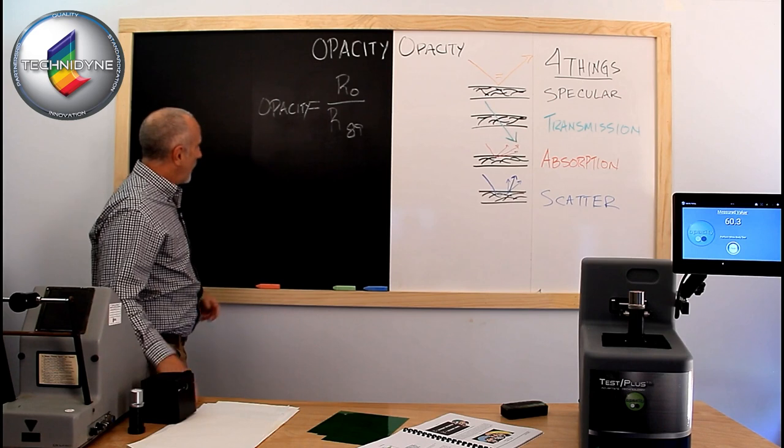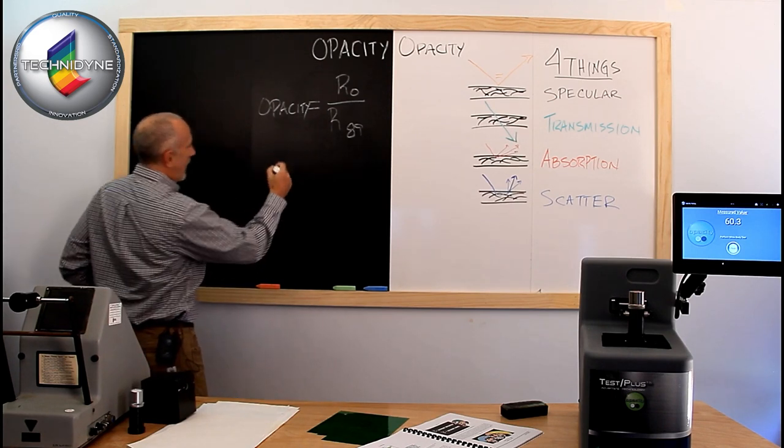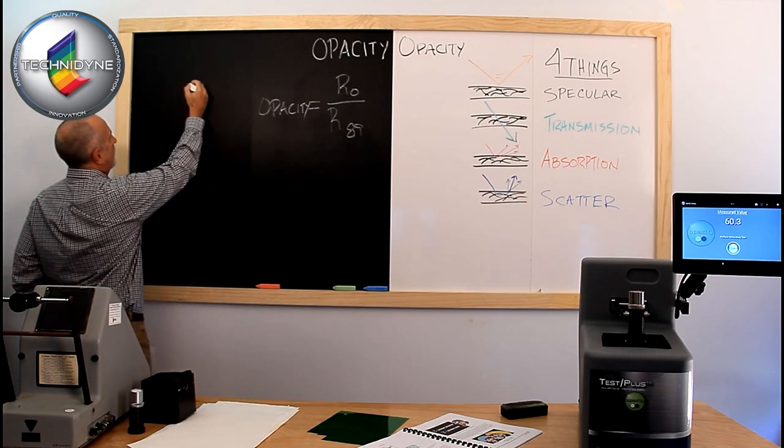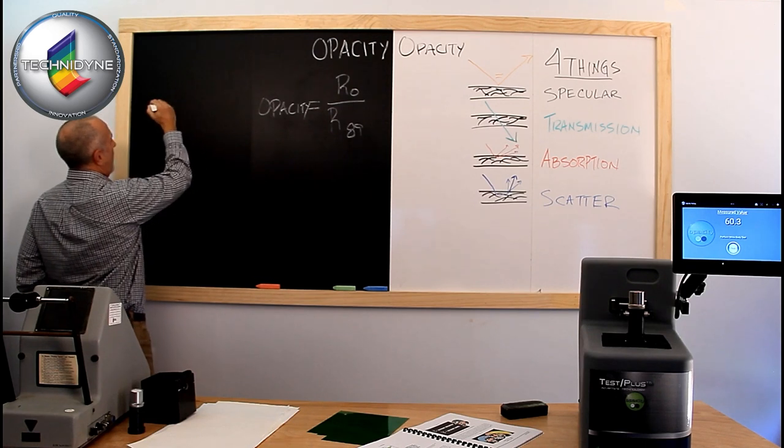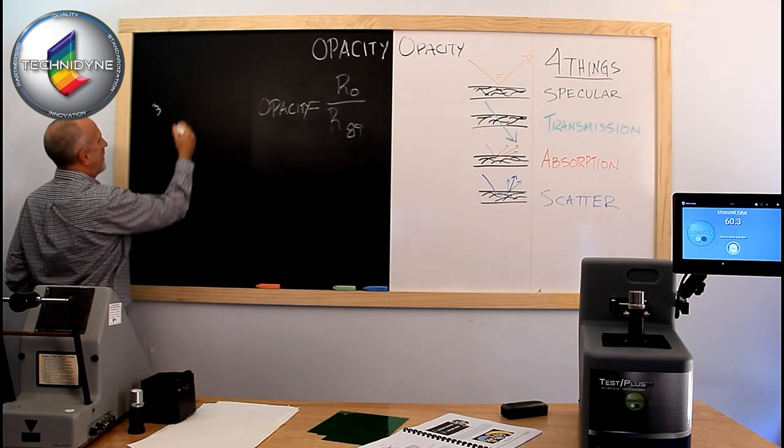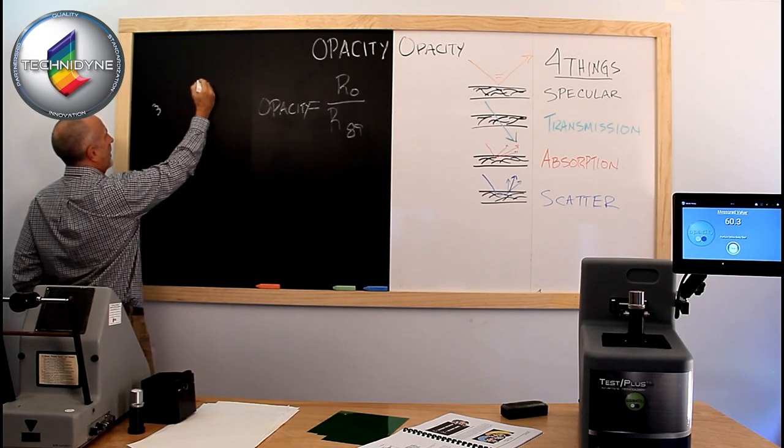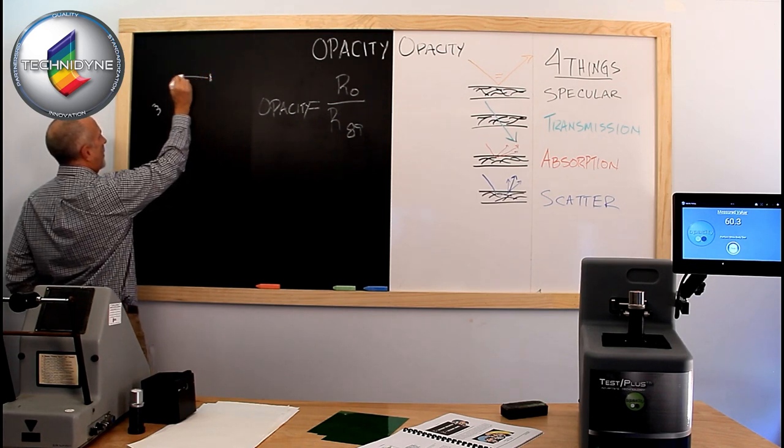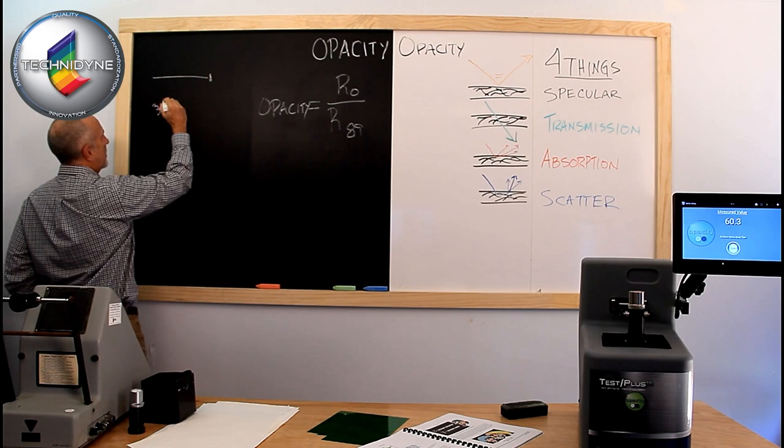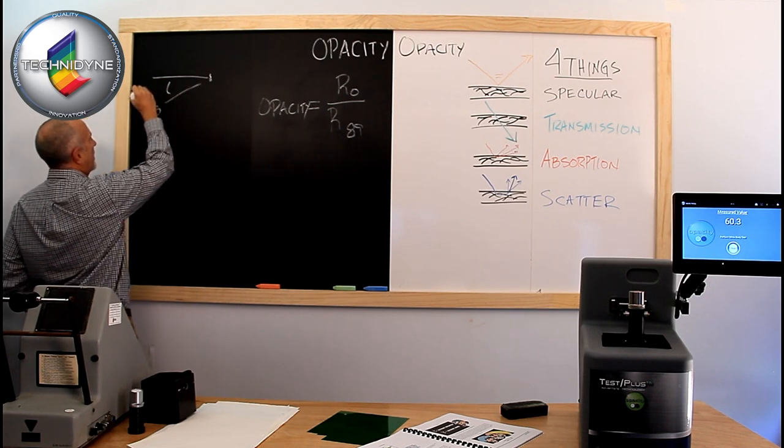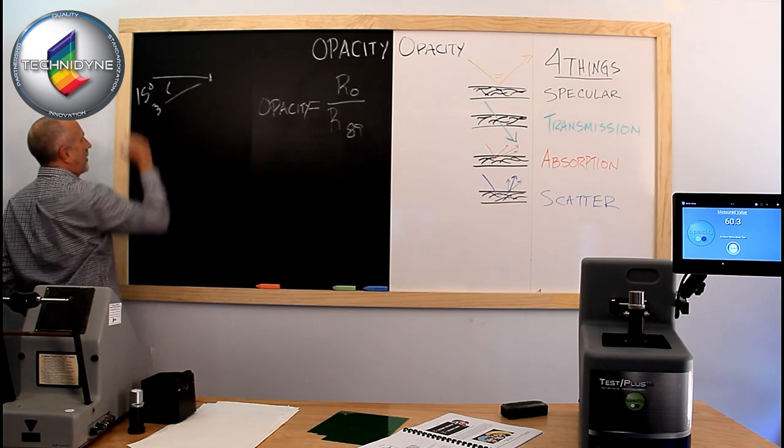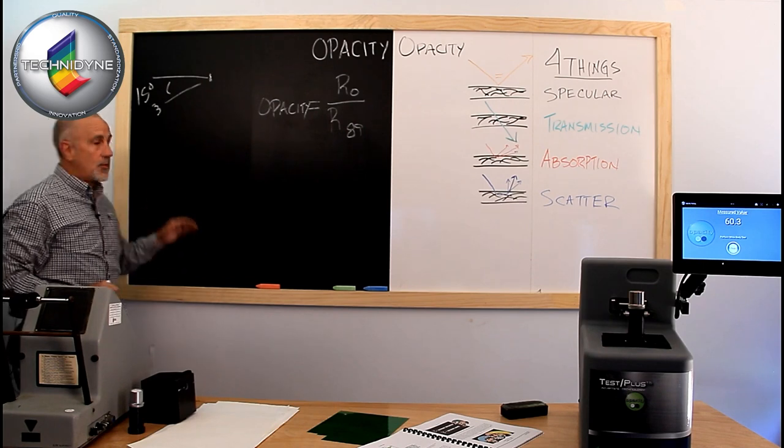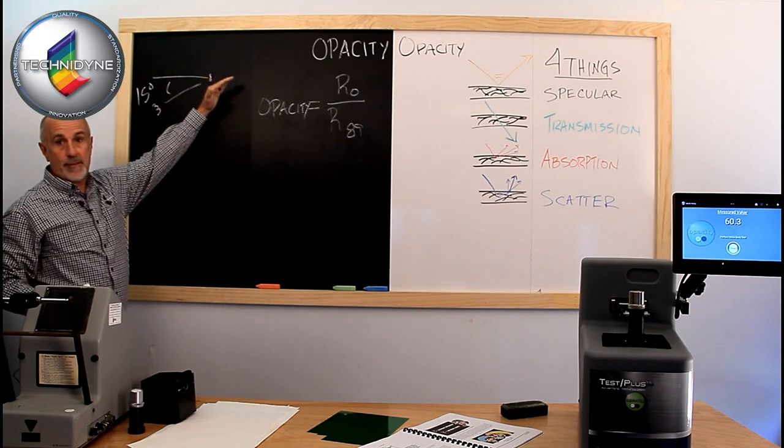So if you will, you've got a lamp that's sitting here. And then you've got a sample port right there. So this angle here is 15 degrees. So it has 15 degree illumination.